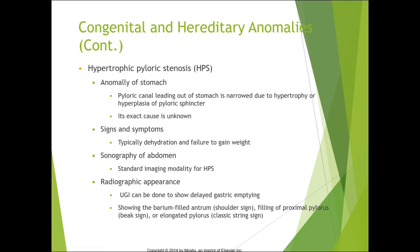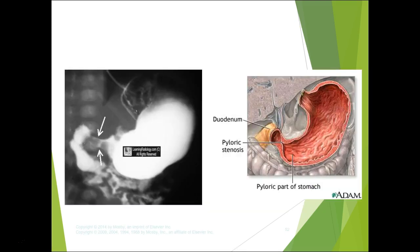Hypertrophic pyloric stenosis is an anomaly of the stomach where the pyloric canal is narrowed due to hypertrophy or hyperplasia of the pyloric sphincter. We don't know why it happens. Signs and symptoms are typically dehydration, fatigue, and failure to gain weight. Ultrasound is the best first-line modality, with upper GI as needed. On imaging you can see a big stomach with a narrowing that isn't allowing food to pass through.